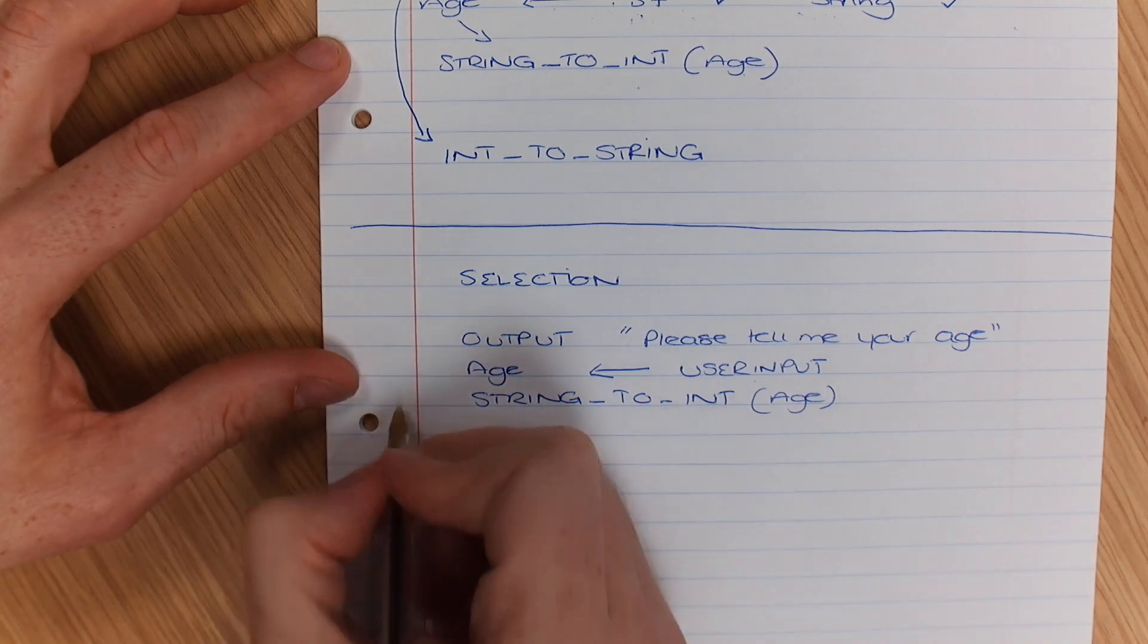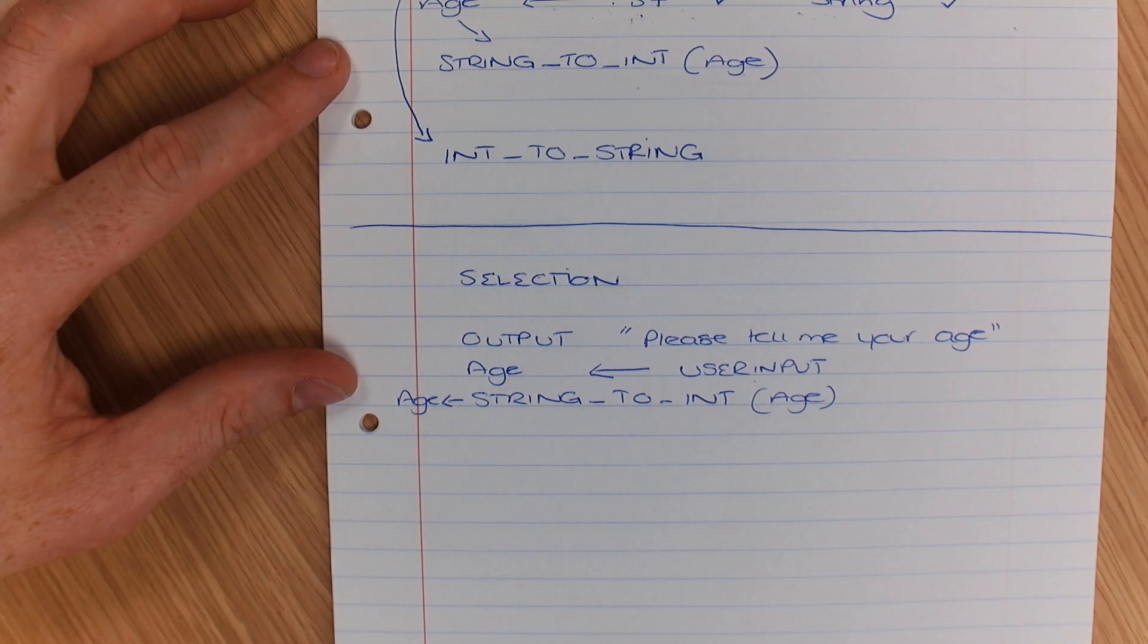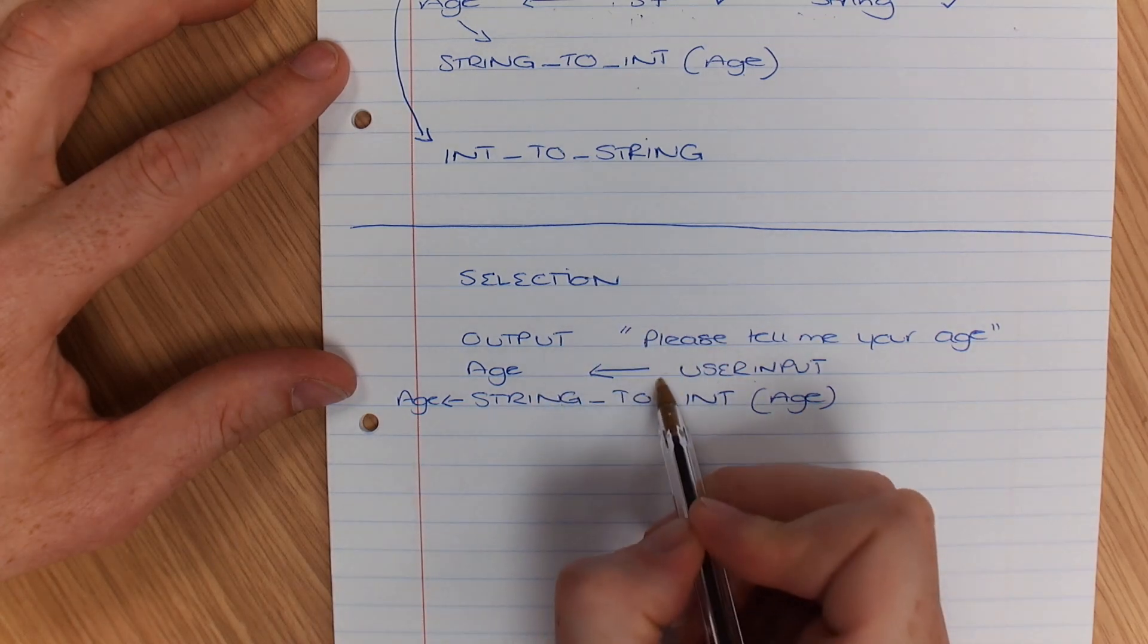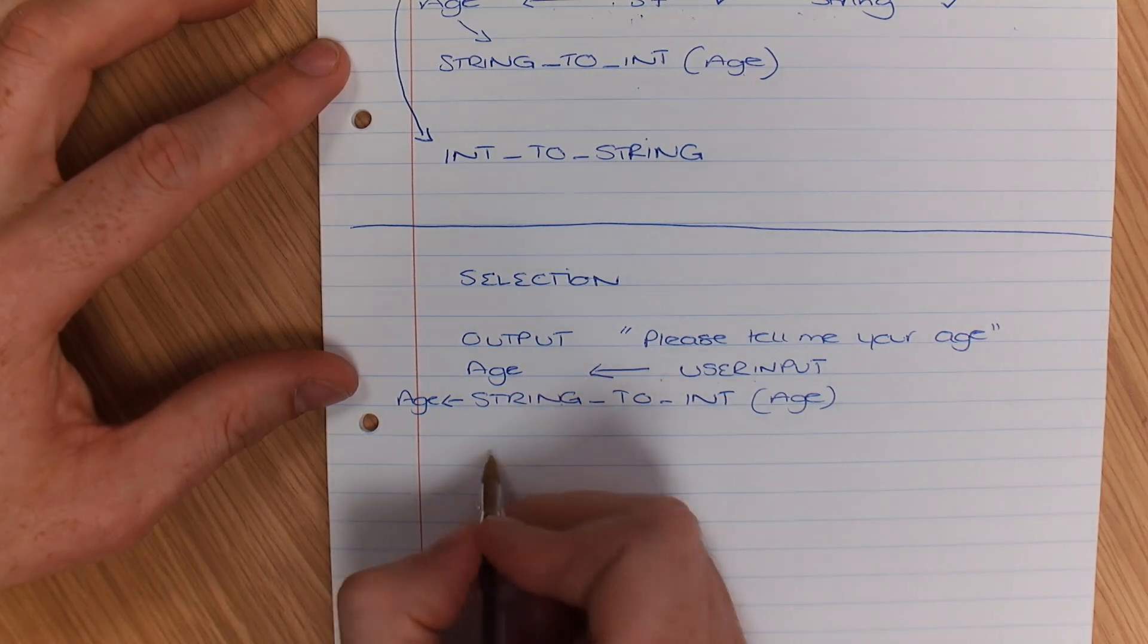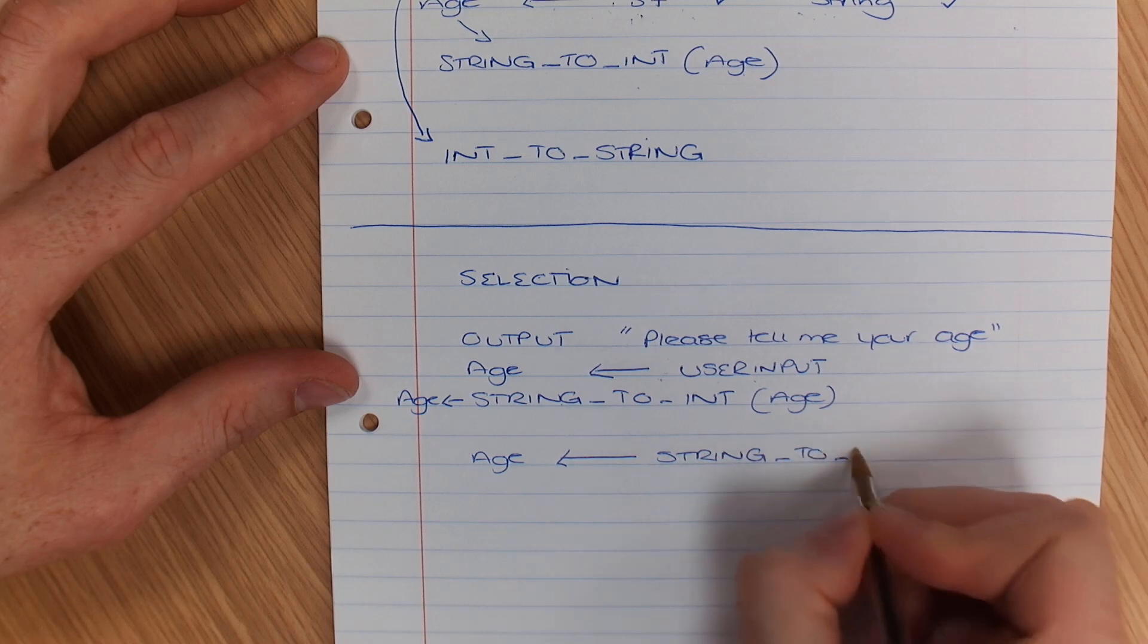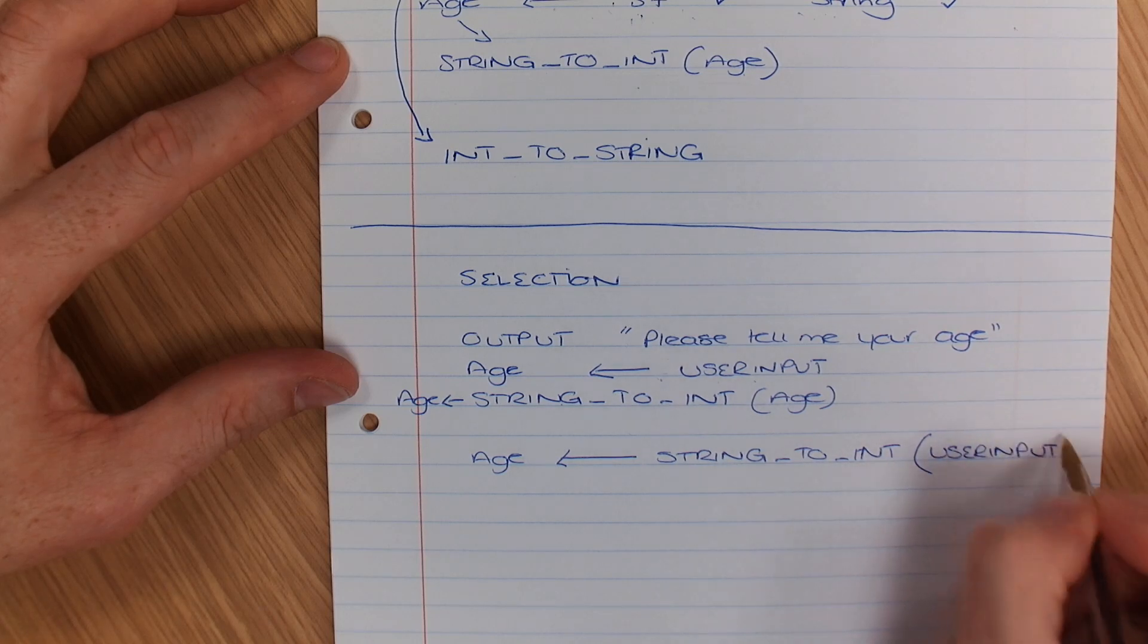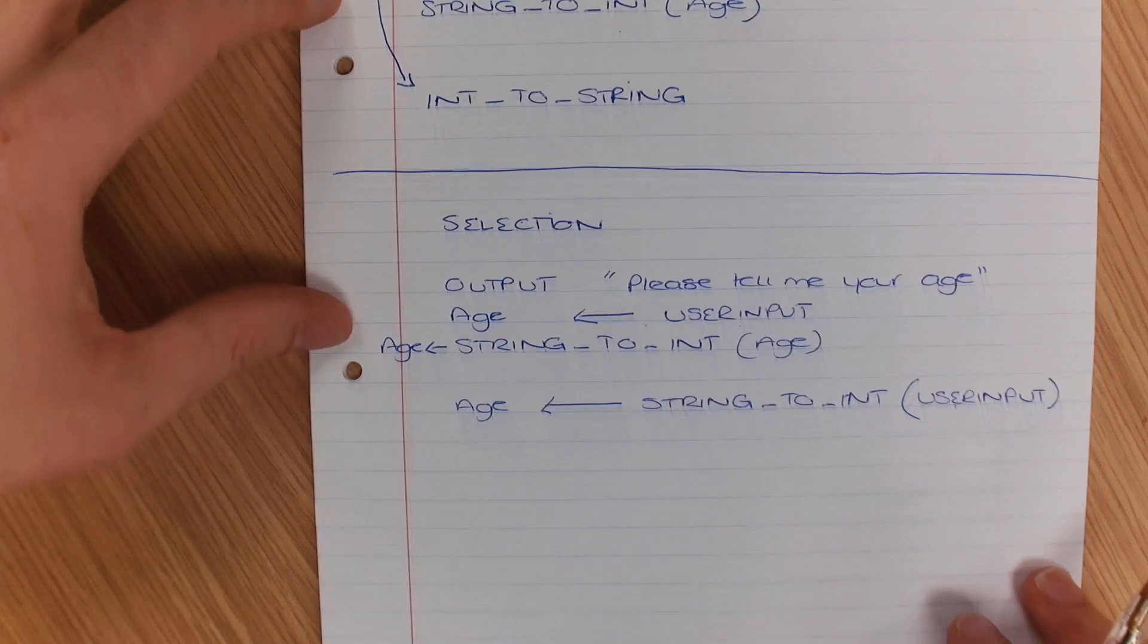In fact, I've left something off there. I should say age is assigned string to int age, because that's how you do it in Python. Now, some people up here might put string to int, and then in there put user input. So another way of doing it, just to show you, I could do age is string to int, some people might do it this way, and then in brackets there go user input. That now means whatever they type in is stored as a number. I'll take questions at the end, but what I'm going to do now.